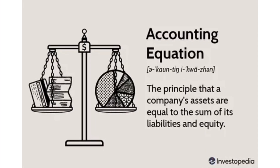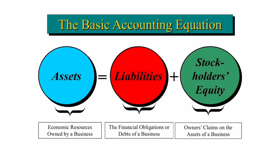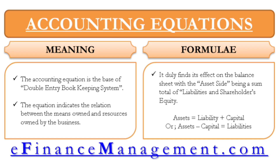We also took a practical simple example to understand everything. The key conclusion was that whatever you add to one side, the same must be added to the other side, so that Assets = Liabilities + Equity holds true. Whatever treatment you do on one side must also be done on the other side.